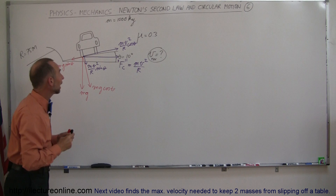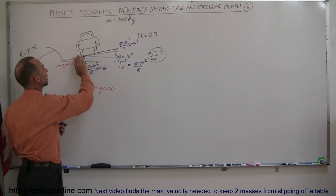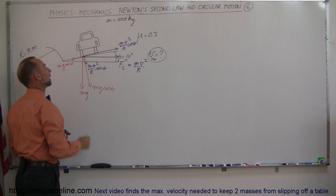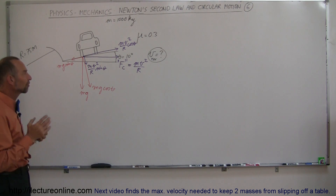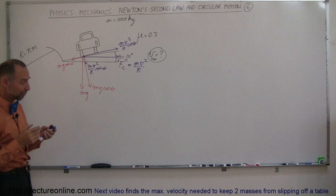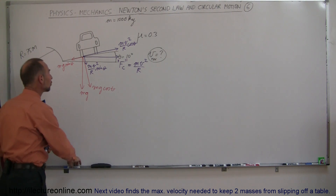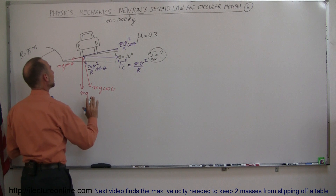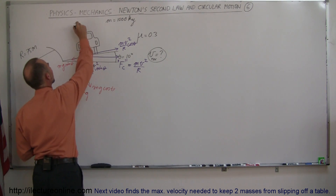If mv²/R is bigger than mg sine theta, the car would tend to go to the outside. If it's smaller, the car would tend to go to the inside. But that's not the whole story — since there's friction, we also have to take that into account. The normal force is the reactionary force of the surface pushing back against the car.